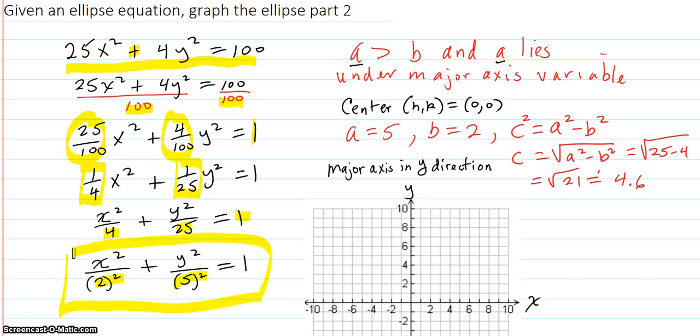Okay, so there's your equation. You immediately know that the a is the 5, because a is always the largest. So a is 5, b is therefore the other one, 2. It's x minus 0 and y minus 0. So the hk center is 0, 0.